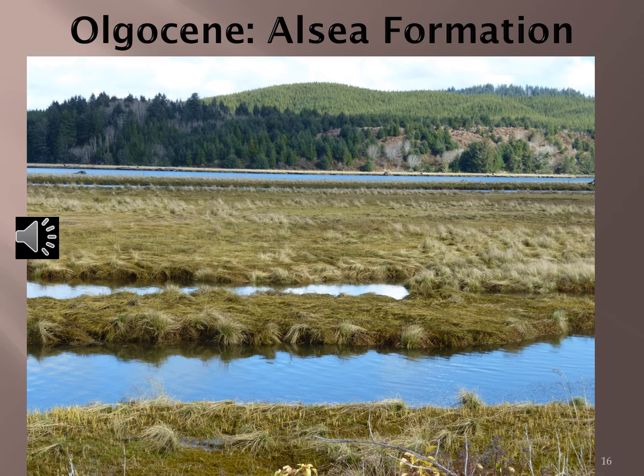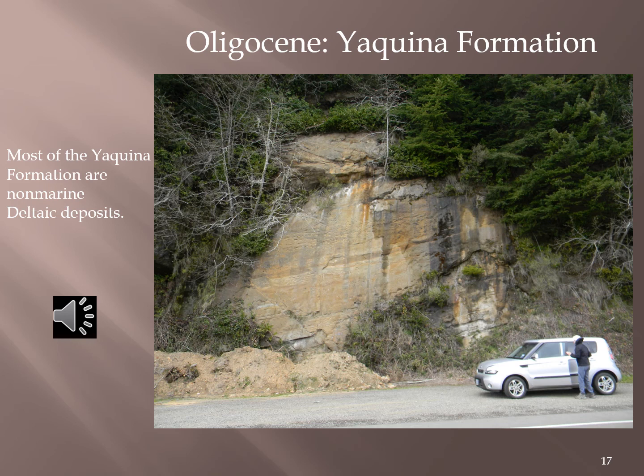During the short-lived Oligocene epoch, from 33.7 million to 23.8 million years ago, marine sedimentation was limited to embayments along the central and north coast. The Alsea Formation is a massive to thick-bedded tuffaceous marine siltstone and fine-grained sandstone, locally concretionary. The Umpqua Formation is a thick to thin-bedded sandstone, glauconitic sandstone, conglomerate, and tuffaceous siltstone of deltaic origin. The tuffaceous siltstone contains thin coal and ash beds.